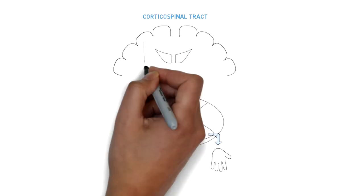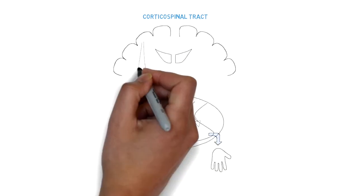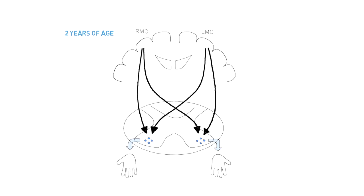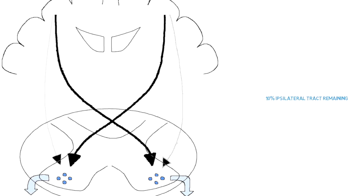...the motor pathway, or corticospinal tract, has bilateral projection from one hemisphere in newborns. By around two years of age, a lot of the ipsilateral corticospinal tract withdraws, leaving around 10% of the ipsilateral corticospinal tract, with a primary contralateral corticospinal tract connection.